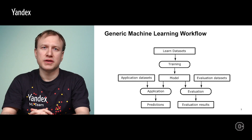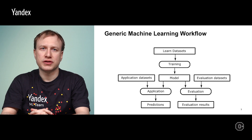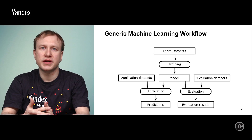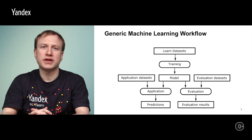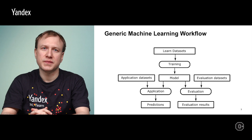Let's begin by examining the generic machine learning workflow. We will deal with supervised learning problems where learning datasets contain labels for data, possibly indirectly via query pairs. First, learning datasets are used to train a model. Then this model can be used for application — the trained model is used as a function to predict unknown labels based on feature values for new datasets.